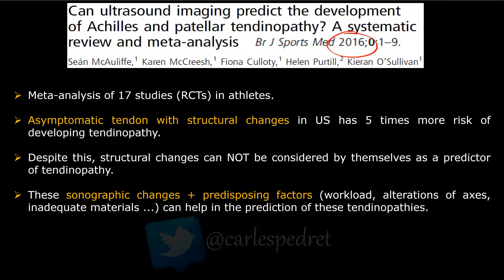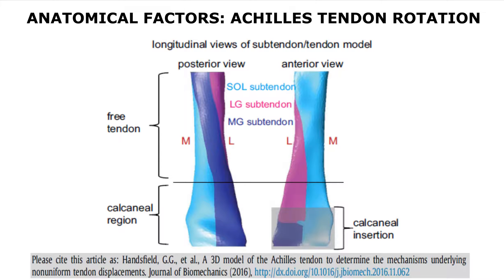...sonographic changes plus predisposing factors such as an increase of workload, alterations of the biomechanical axis of the lower limb, or inadequate materials can help in the prediction of tendinopathies. In my opinion, what is really important to control are the risk factors of every individual athlete or person to prevent or treat tendinopathy problems. If we can assess the risk factors and change the tendon's functionality, it is normally preserved from pain.